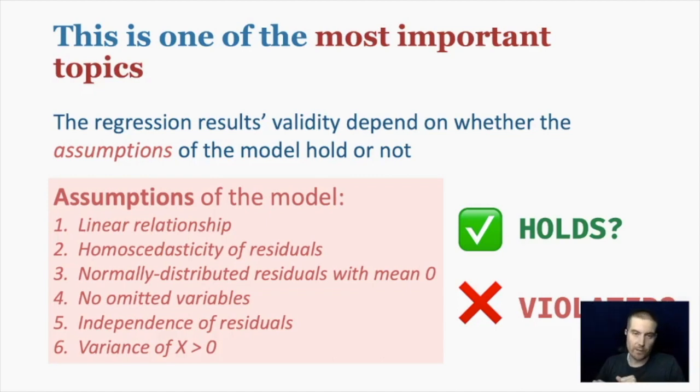We have a linear relationship. That is one that we've talked about before. Homoscedasticity of residuals, we've talked about that one. Normally distributed residuals, we've talked about that one with a mean of zero. That's by definition of the model that's just going to happen.